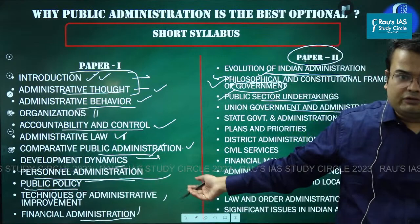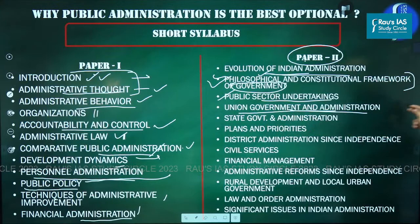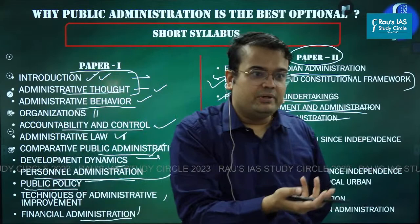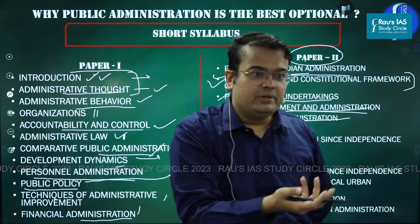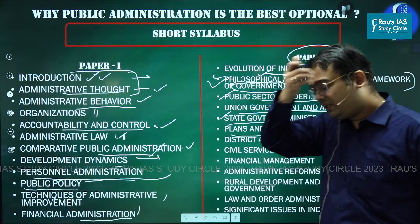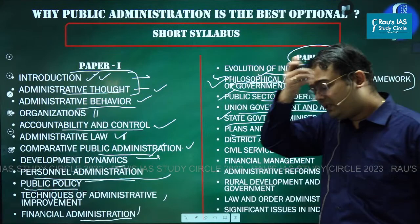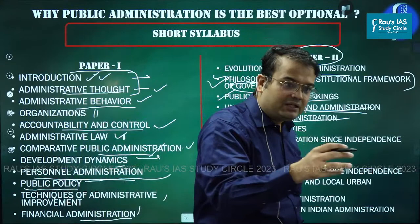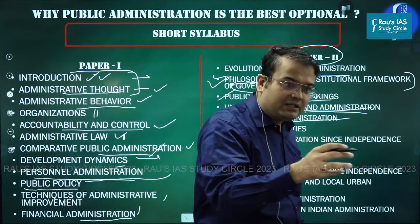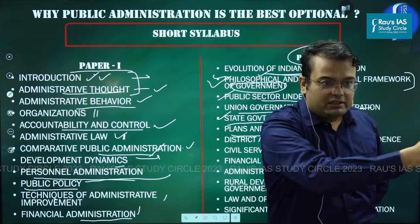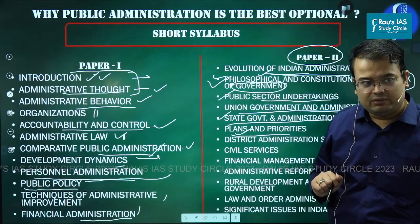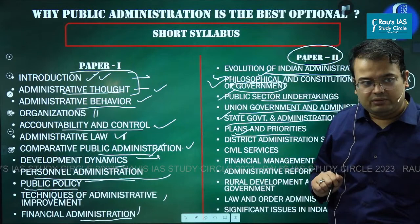Then state government and administration — the chief secretary, cabinet at the state level. We study plans and priorities — how planning is being done in India. We used to have the Planning Commission, then we created NITI Aayog. We also have District Planning Committees at the district level. How plans made at the district level get processed into a single plan is something we understand in plans and priorities.